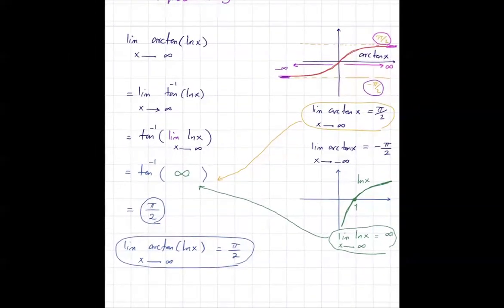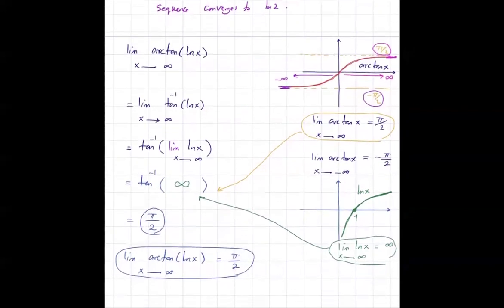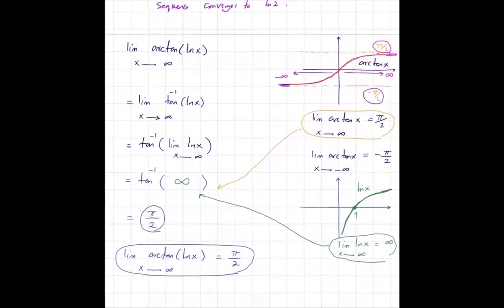We went back and forth between the definition of arctan, the graph of arctan, and the graph of the ln function to analyze the behavior at the endpoints.